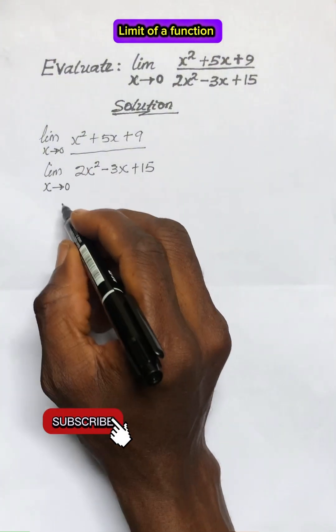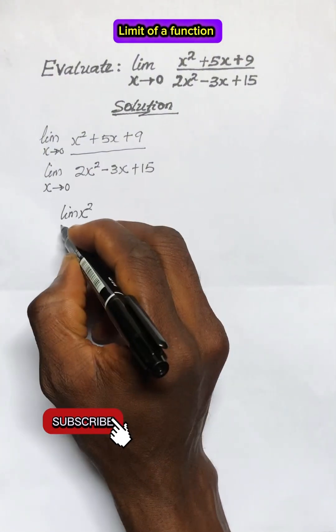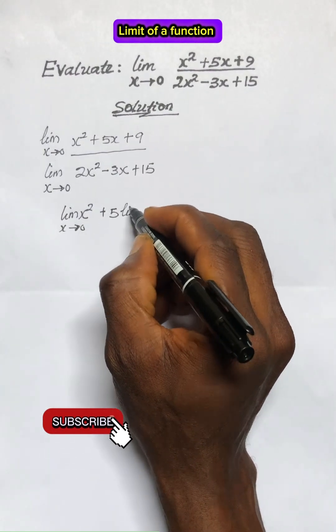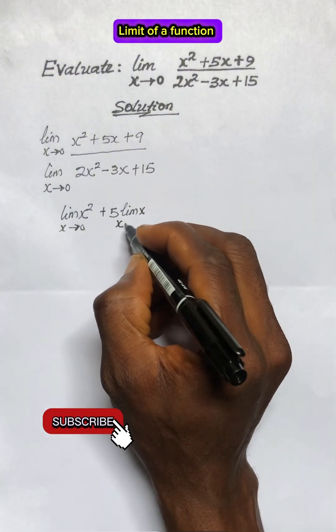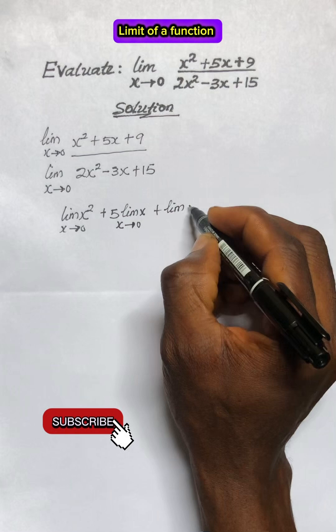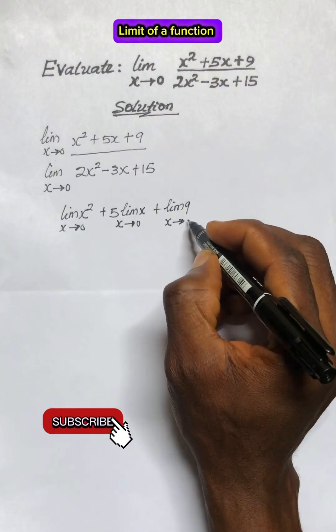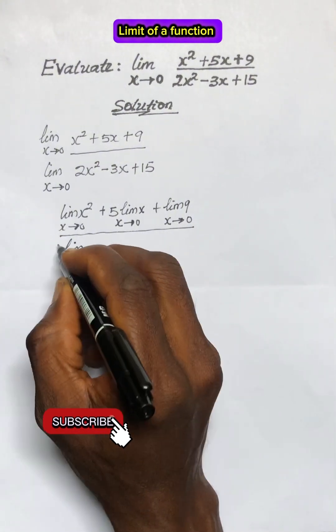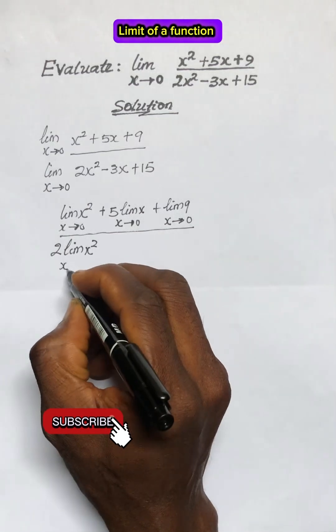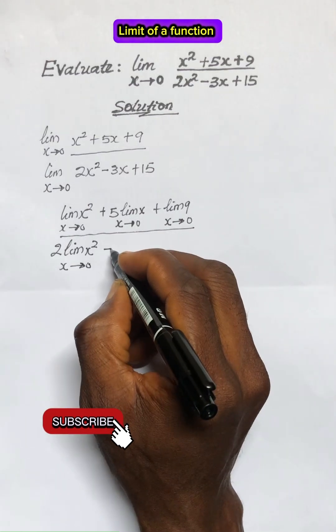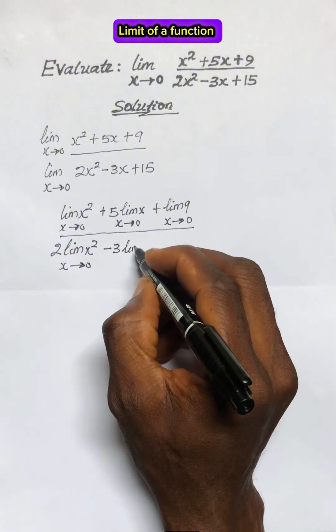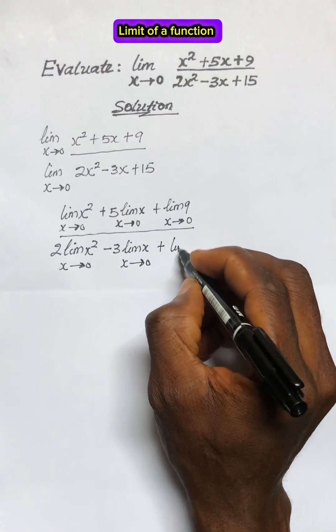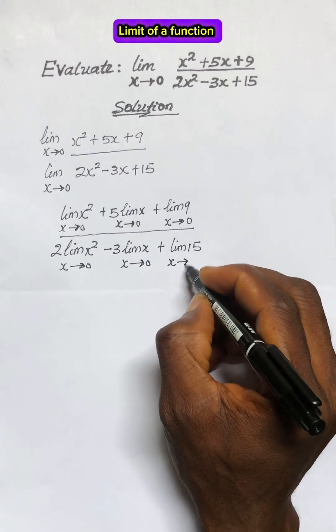Now this simply means the limit of x² as x approaches 0, plus we bring out 5 and the limit of x as x approaches 0, plus the limit of 9 as x approaches 0, all over: we bring out the 2 from the limit of x² as x approaches 0, minus we bring out 3 from the limit of x as x approaches 0, plus the limit of 15 as x approaches 0.